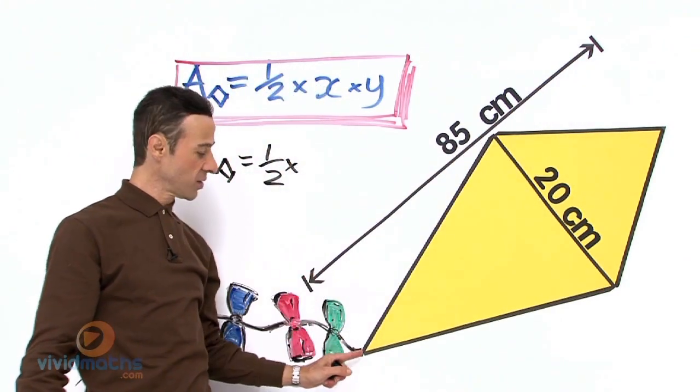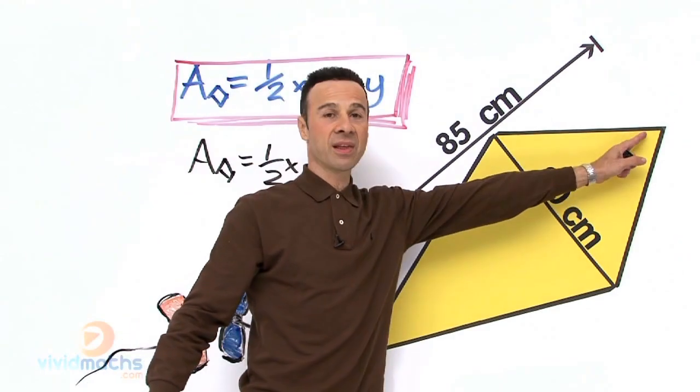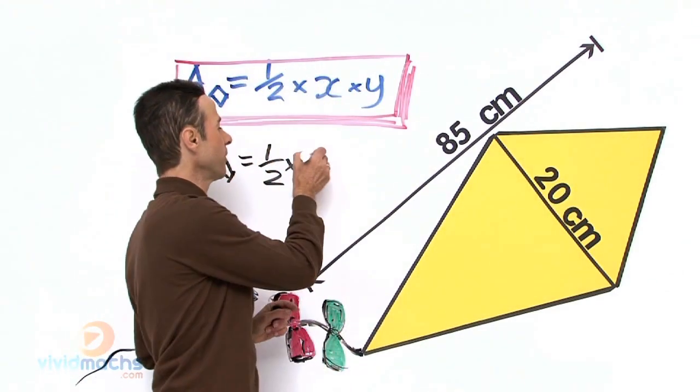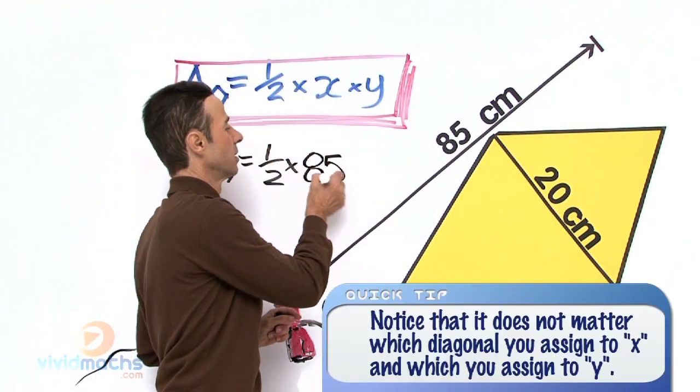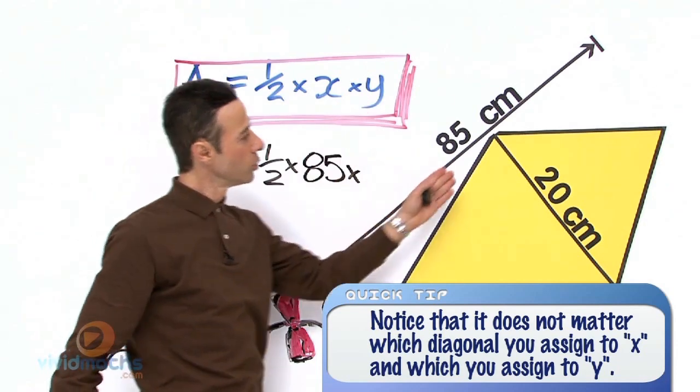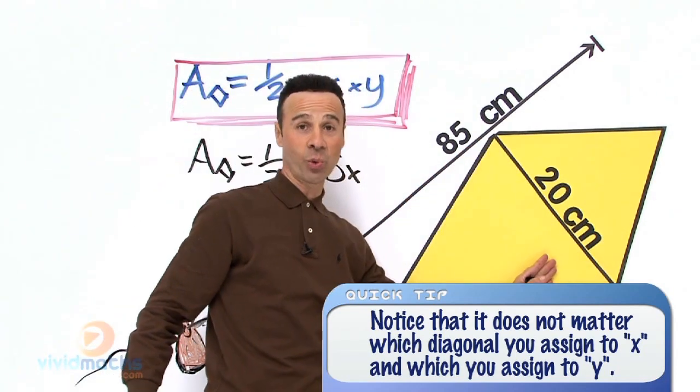There it is, from one corner to the other - this corner all the way to that corner - that is 85 centimeters. Times y, which is straight across from that corner to that corner, which is 20 centimeters.